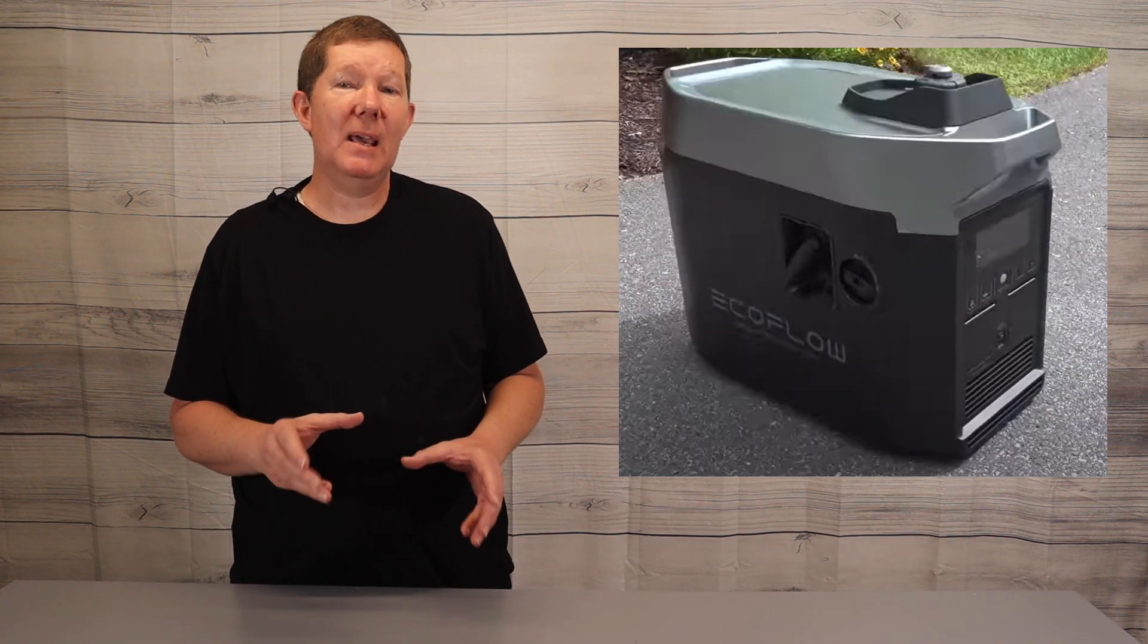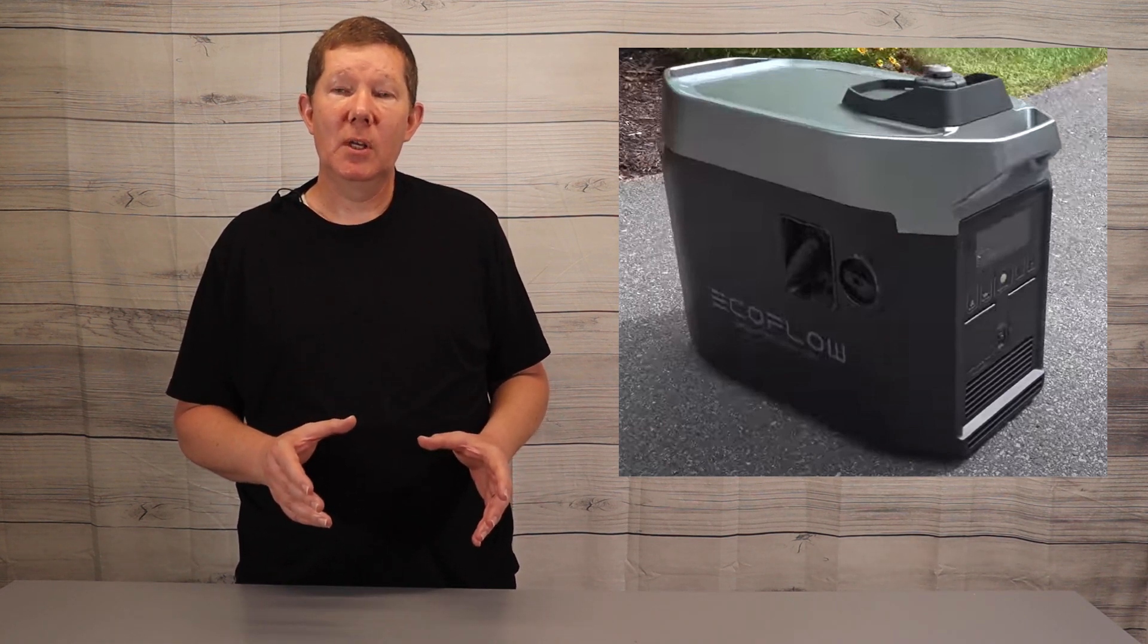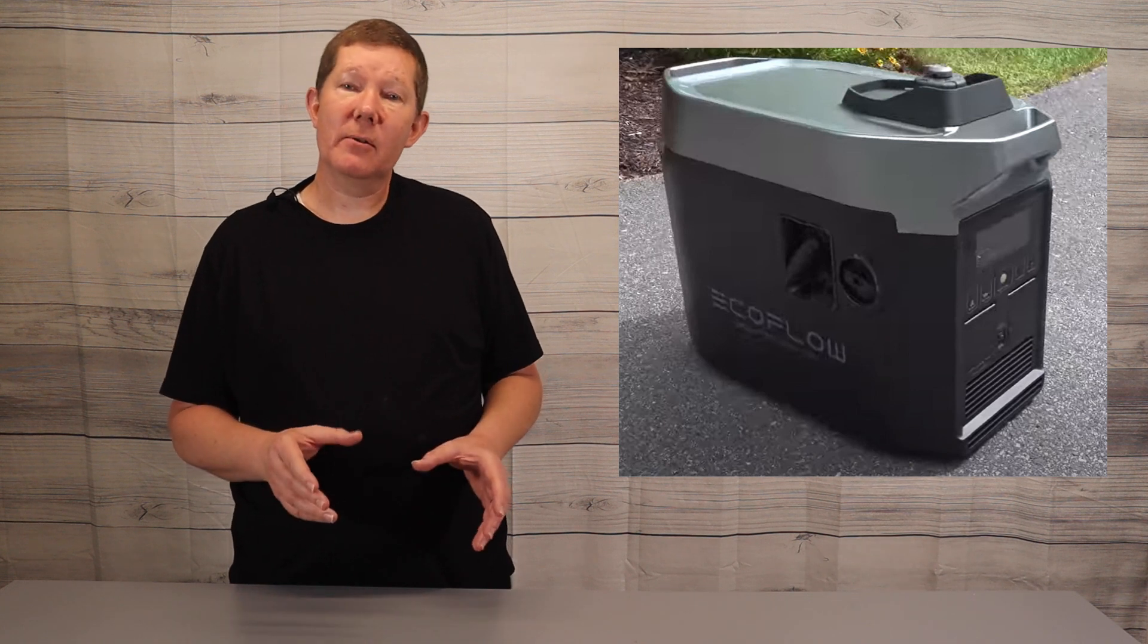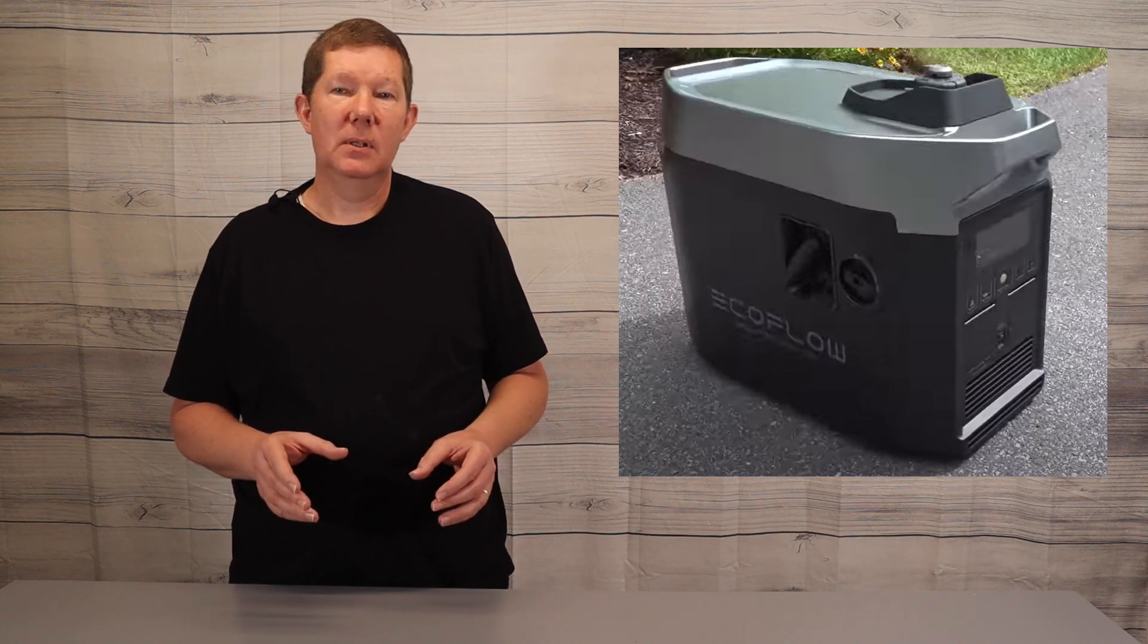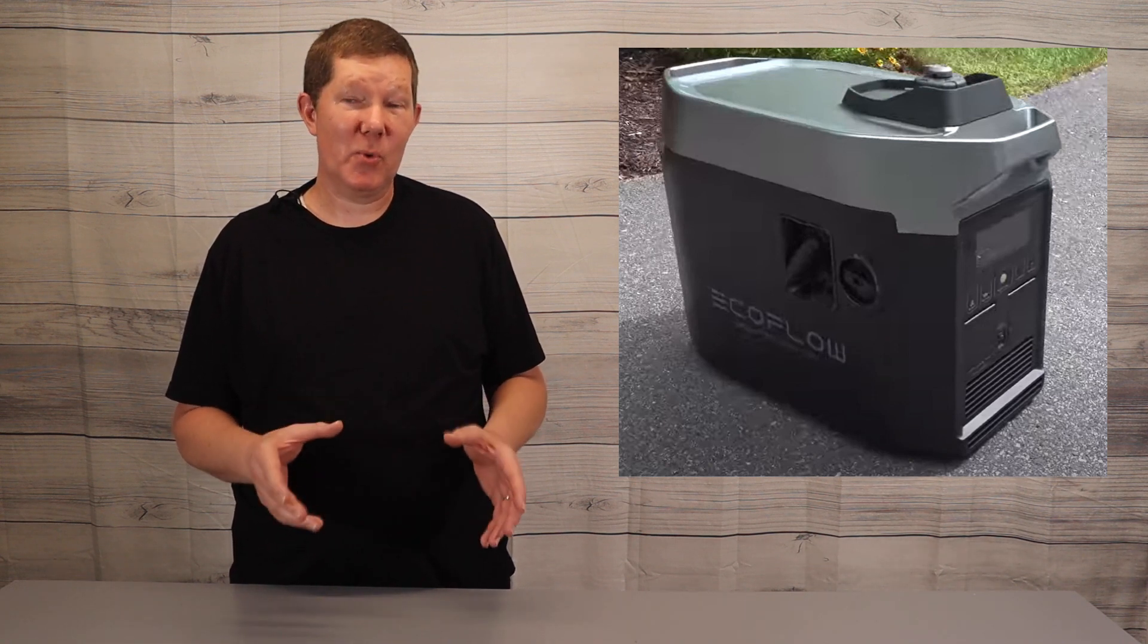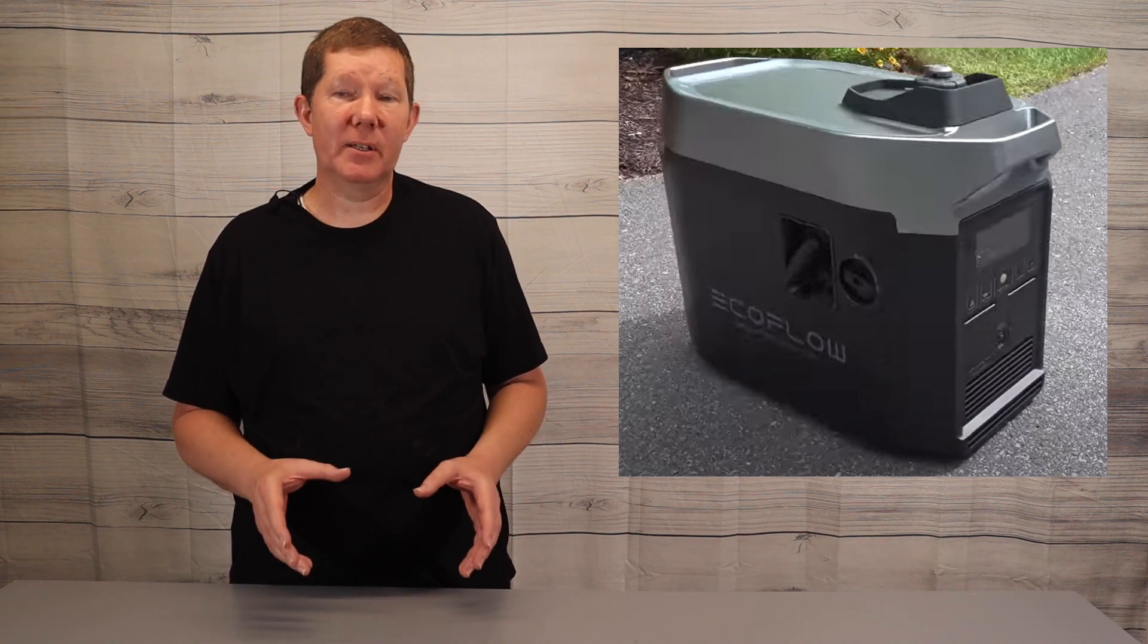This gas-powered system is made so that if you have multiple cloudy days and your batteries are getting low, you have the means to recharge those batteries rather quickly. The smart generator can charge a Delta Pro in about two and a half hours. The generator can run on one gallon of gas for about three and a half hours. So it's very efficient compared to any other generator on the market today. Most generators on the market today run for about an hour on one gallon of gas. But the EcoFlow smart generator can run about three hours on a gallon of gas.